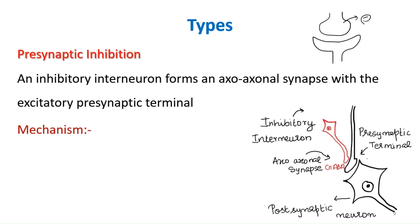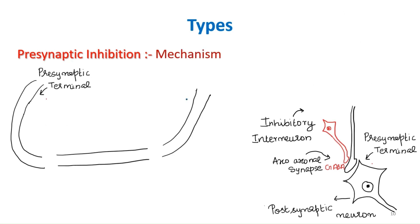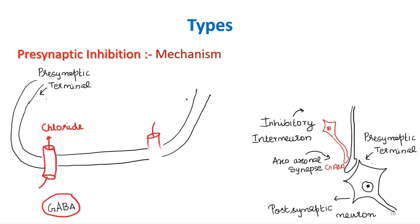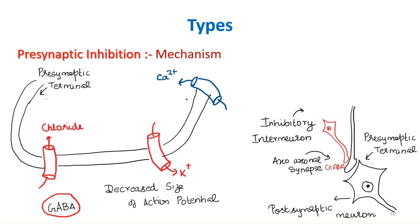The mechanism works as follows: GABA is released by the inhibitory interneuron onto the presynaptic terminal. GABA opens chloride channels causing chloride influx, or opens potassium channels causing potassium efflux. Either way, there is a decreased size of the action potential. Normally, synaptic transmission requires opening of calcium channels and release of neurotransmitters, but because the action potential is decreased in size, calcium channels do not open and neurotransmitter release does not occur.